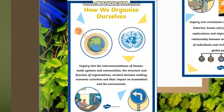Let's connect this theme to the previous theme that we already studied about — How We Organize Ourselves. It's an inquiry into the interconnectedness of human-made systems and communities, the structure and function of organizations, societal decision-making, economic activities, and their impact on humankind and the environment. This theme is already related to the environment around us and how we organize ourselves on planet Earth, and our new theme is connected to it because we are also going to talk about how plants help in balancing the environment around us.